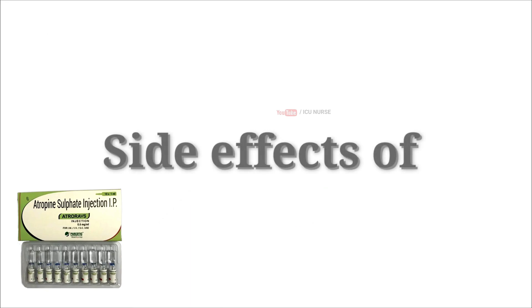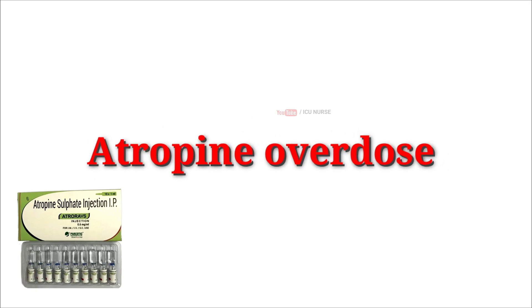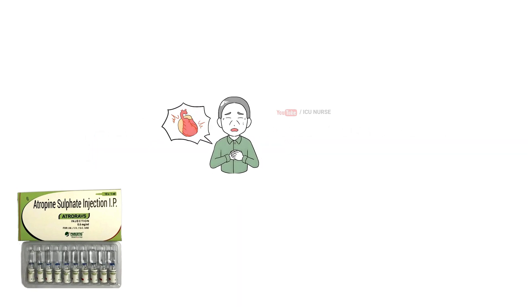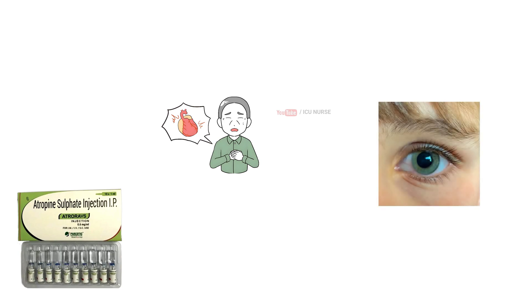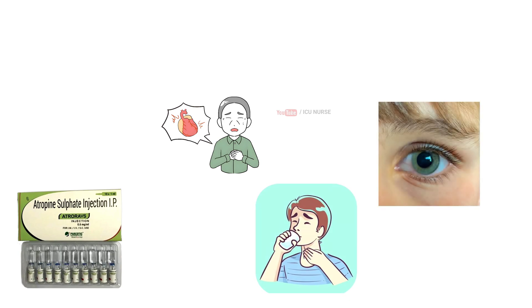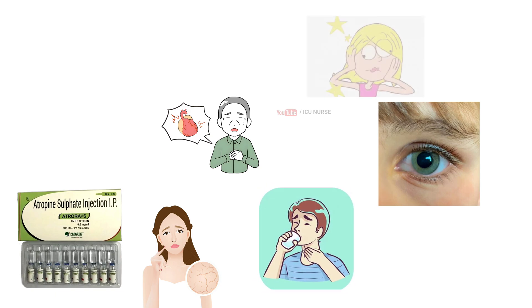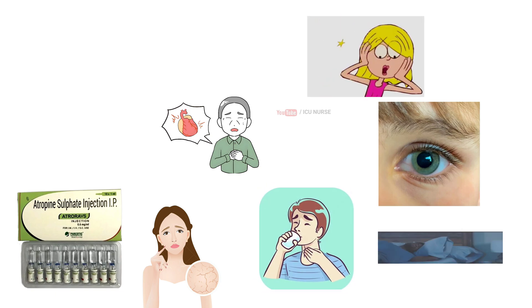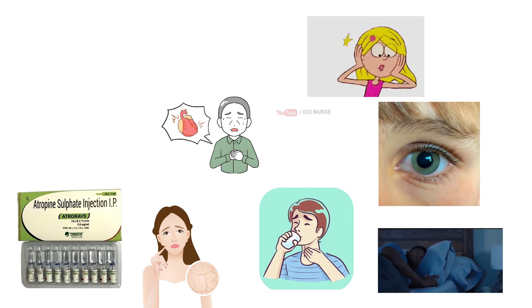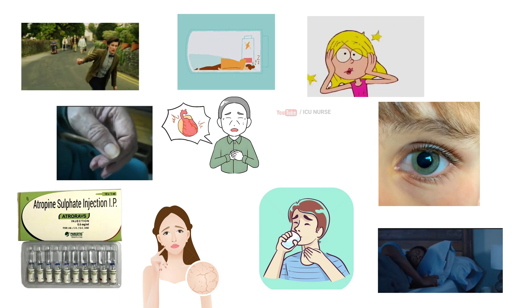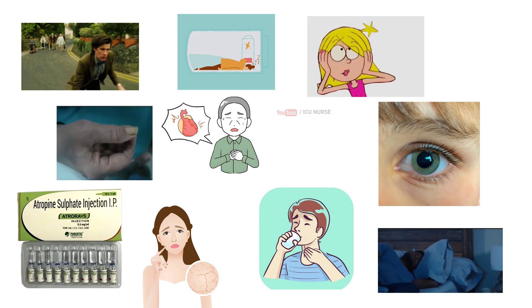Excess doses of atropin sulfate may cause side effects such as palpitations, dilated pupils, difficulty swallowing, hot dry skin, thirst, dizziness, restlessness, tremor, fatigue and problems with coordination.